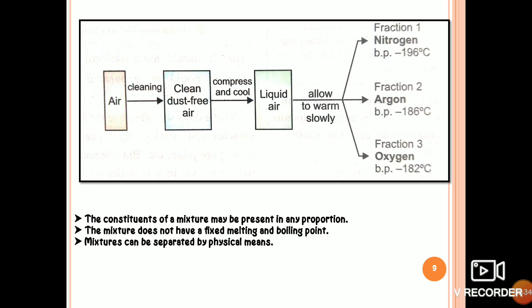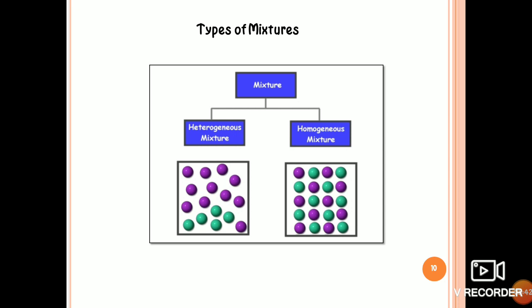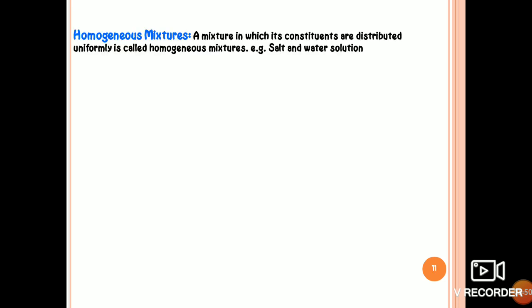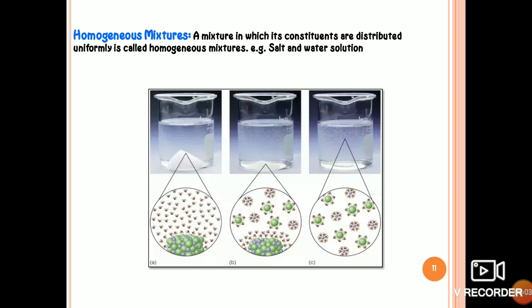Now the types of mixtures. There are two types of mixtures: homogeneous and heterogeneous mixture. A mixture in which its constituents are distributed uniformly is called a homogeneous mixture. Example: salt and water solution. We are mixing salt in water; after some time we can see a clear liquid solution where salt and water molecules are evenly distributed.